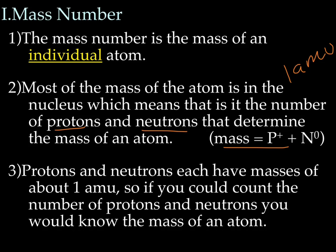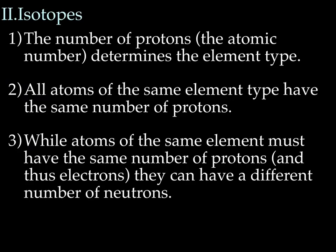Protons and neutrons each have masses of about 1 amu. So you could count the number of protons and neutrons and you would know the mass of an atom.